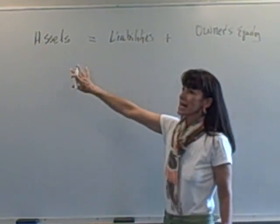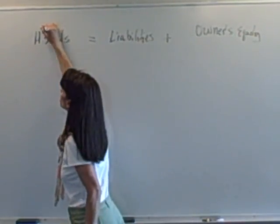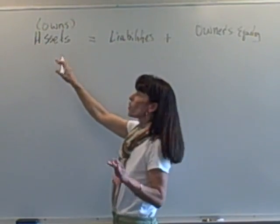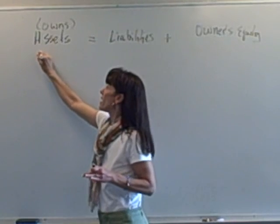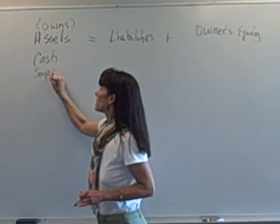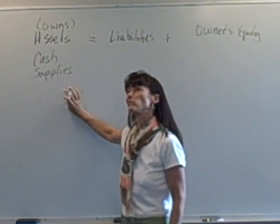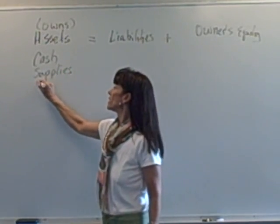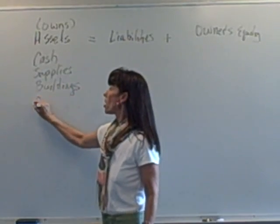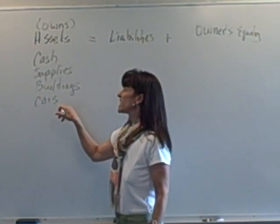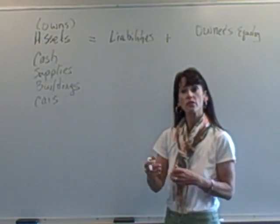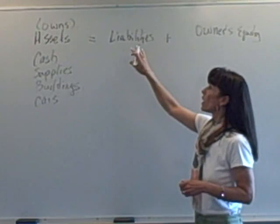Now assets are things that a business owns. These are all good things. So we could think of assets like cash or supplies, how about building? That's what you do your business in. Cars? You kind of get the idea. So these are all things that a business uses to help make money for its organization.